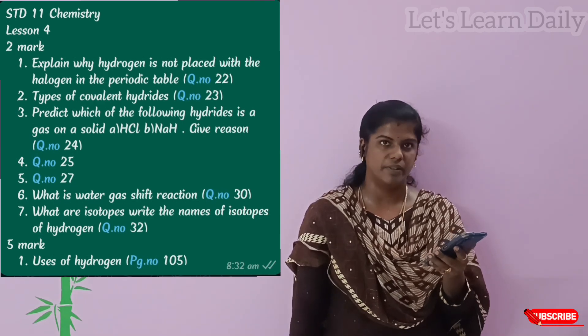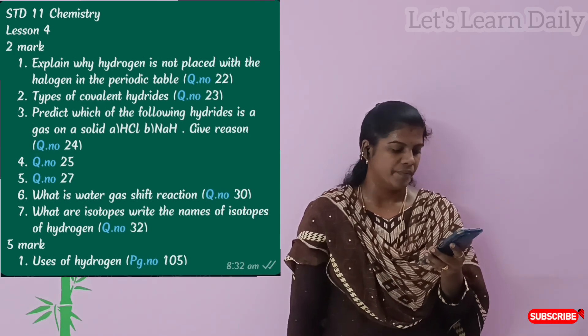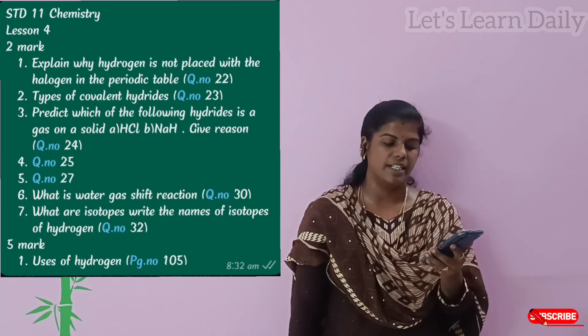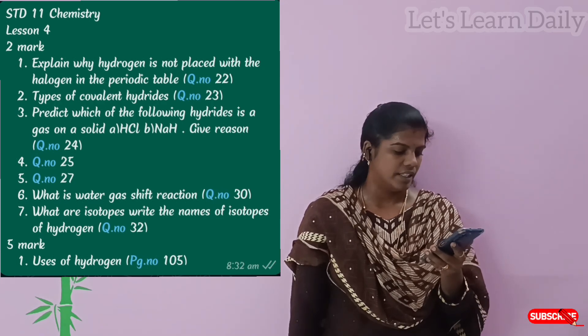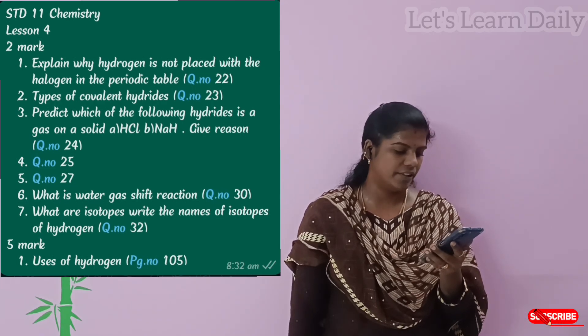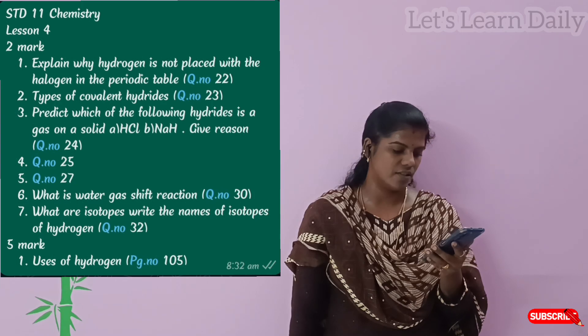Types of oxides and hydrides — question number 23. Next: predict which of the following hydrides is a gas or a solid — question number 24.